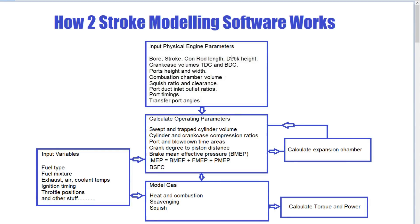The main measurements include bore, stroke, conrod length, and deck height — that is the height from the top of the barrel down to the ports if the piston doesn't quite reach the top. We also need crankcase volumes at top and bottom dead center, the heights and widths of the ports, combustion chamber volume, squish, port ducts — the length of tubing from the inlet or outlet of each port — and port timings: when they open, when they close, port angles, and essentially all of the physical characteristics of the engine. These form our working dimensions for the next part, which is calculating the operating parameters.